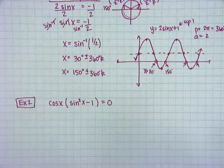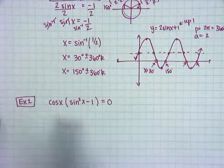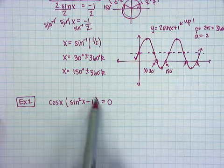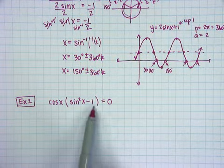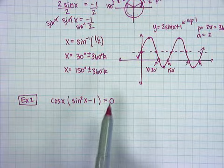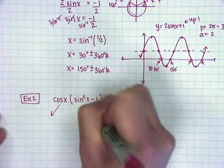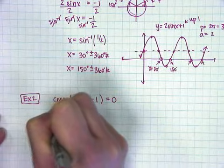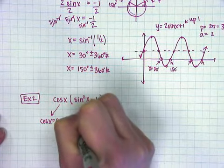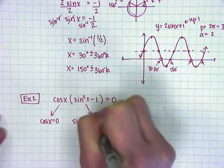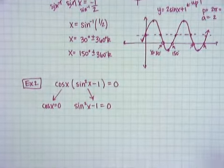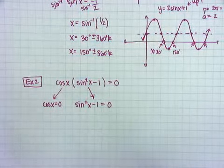Moving on, because I have a limited amount of time here. If you see a problem like this with cosine of x times parentheses sine squared x minus 1 equals 0, it's kind of like a little mini two-part problem. Because of the zero product property, I can split this up and say cosine of x equals 0, and sine squared x minus 1 equals 0.